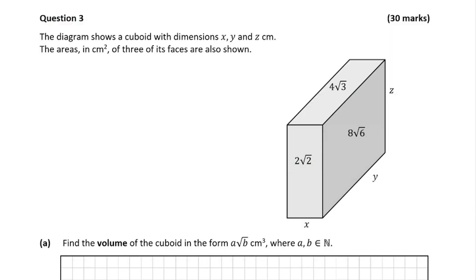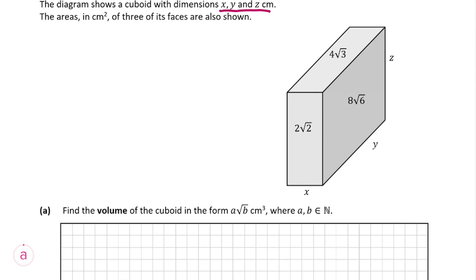This is a geometry and algebra question worth 30 marks. We have a diagram on the right hand side which shows a cuboid with dimensions x, y and z centimetres, and the areas in centimetres squared of three of its faces are also shown. Looking at part A, it says find the volume of the cuboid in the form A root B centimetres cubed. The formula to find the volume of a regular cuboid with sides x, y and z is simply x times y times z, but we're going to ignore that formula for now and work through the question.